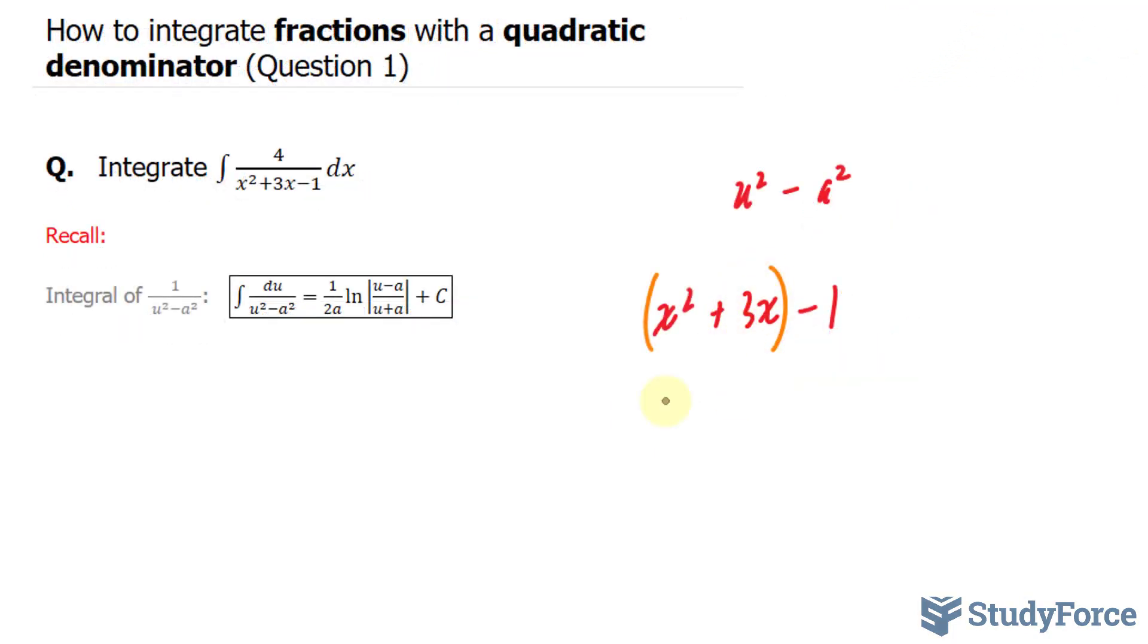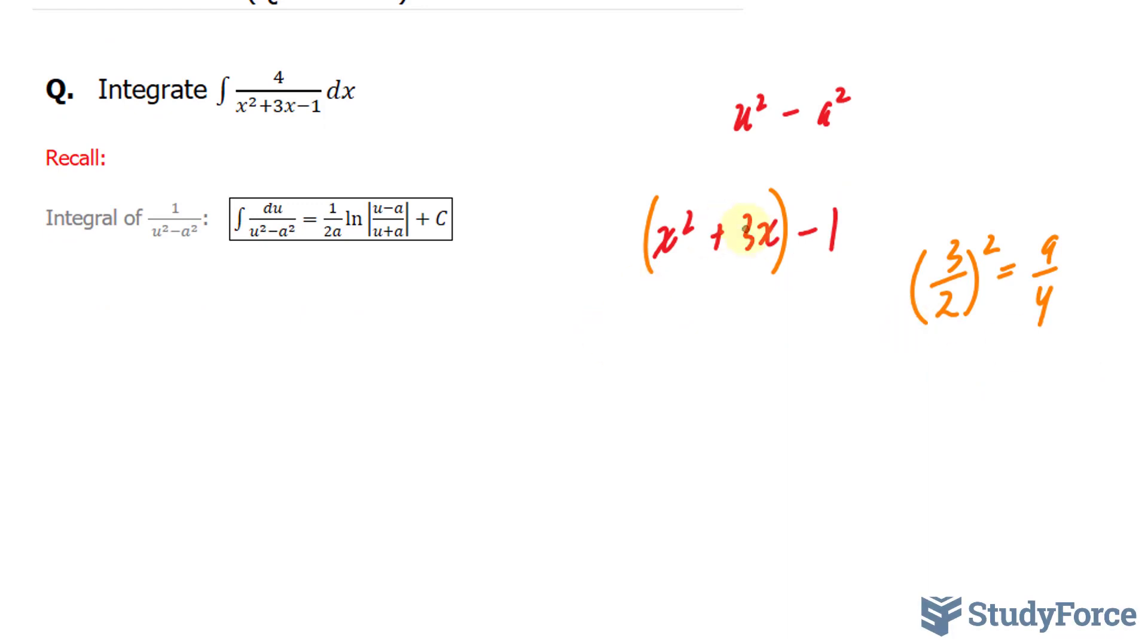Next, you will identify your b term. Our b term is 3x. So we'll take 3, the coefficient, divide it by 2, and square it. This gives us 9 over 4. I'll take 9 over 4 and add it and subtract it to what's inside, specifically the brackets. x to the power of 2 plus 3x plus 9 over 4 minus 9 over 4. Always add and then subtract.